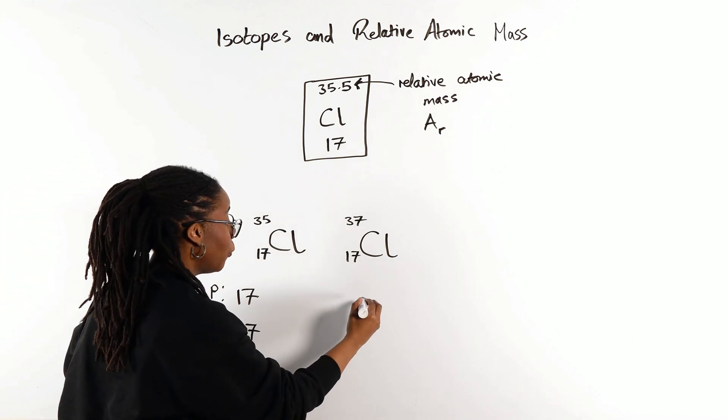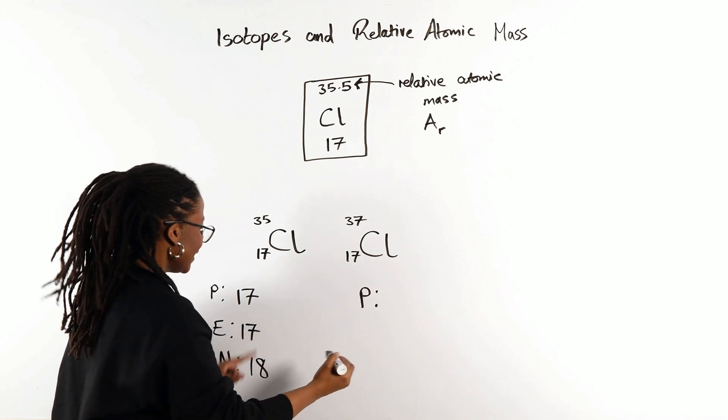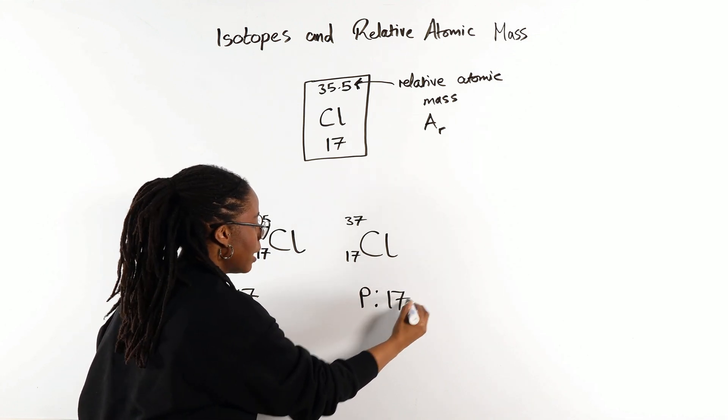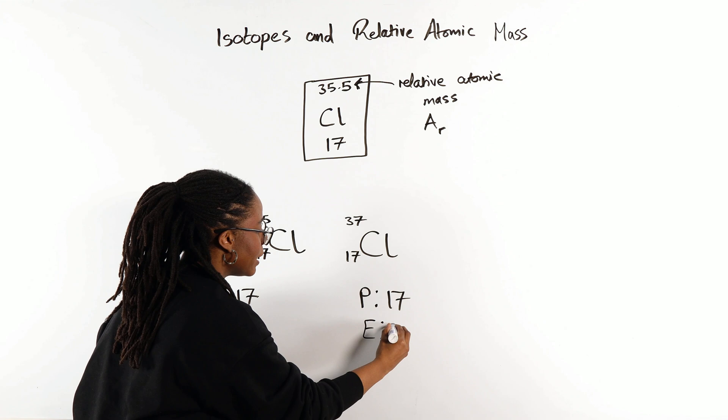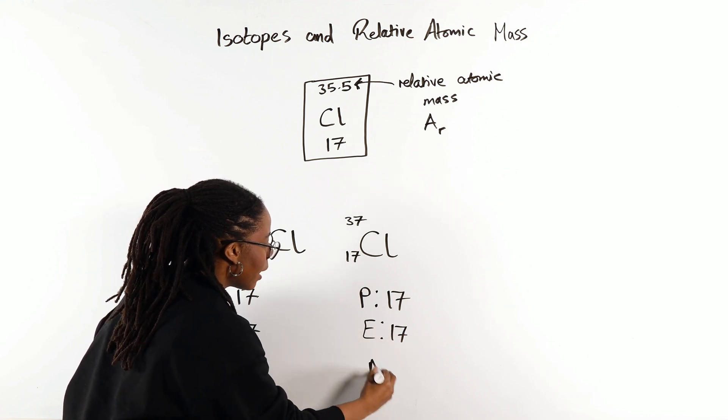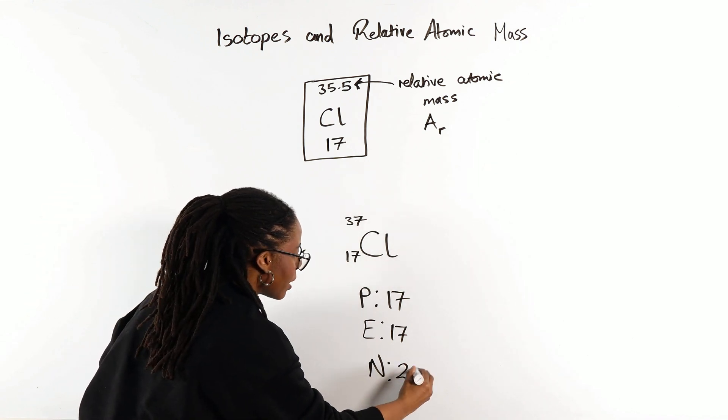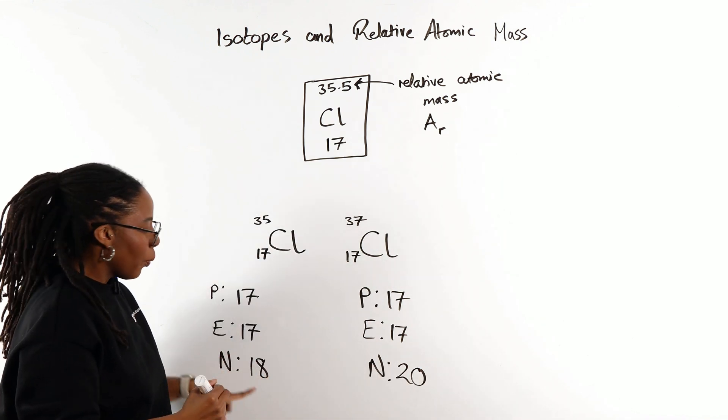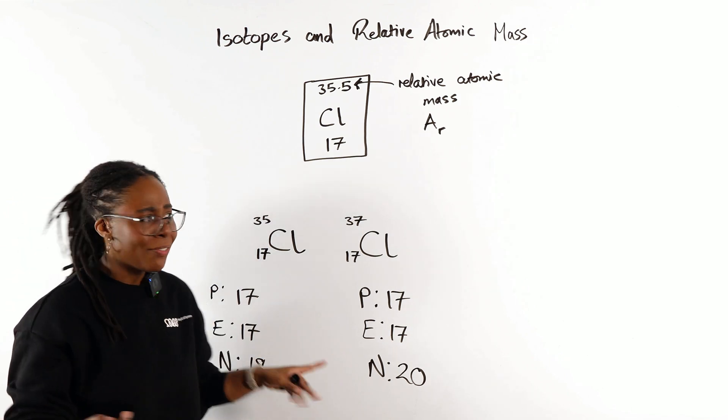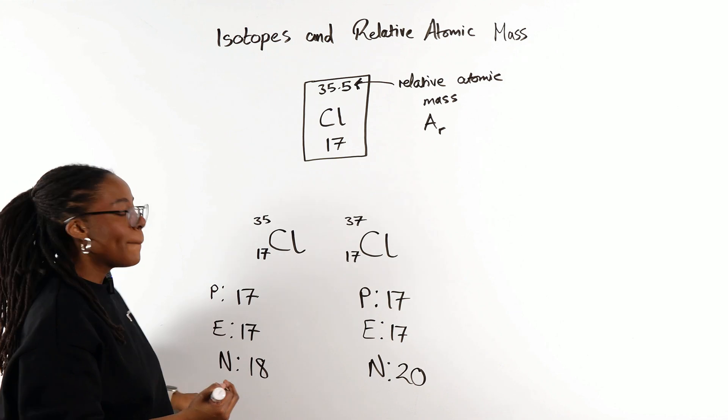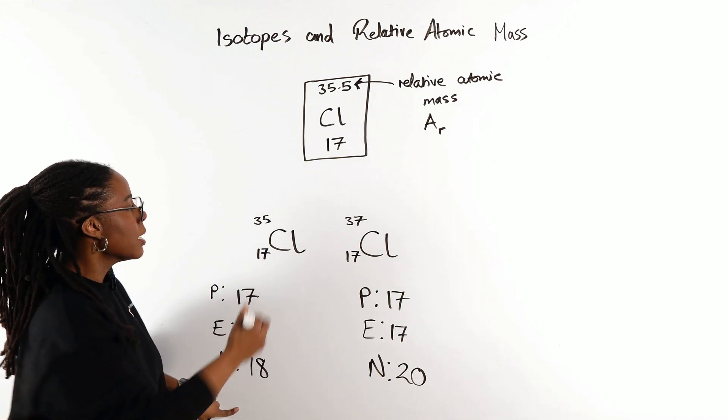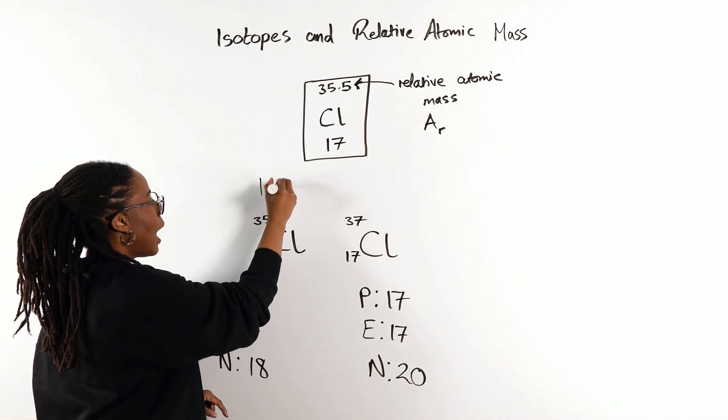For our other form of chlorine, still 17, still 17 protons and therefore still 17 electrons. But this time for our neutrons, 37 minus 17 gives us 20. So what do we notice about them? They have the same number of protons, but a different number of neutrons. And we call these isotopes.